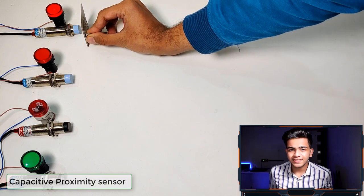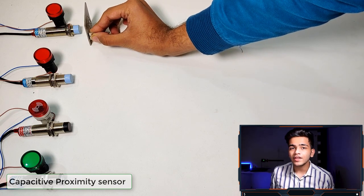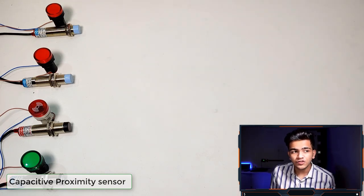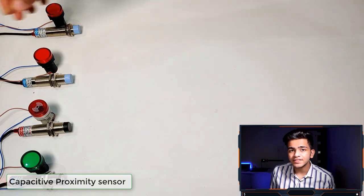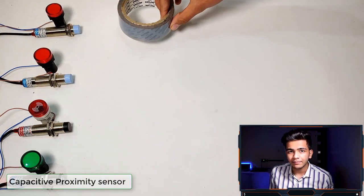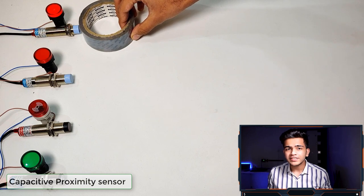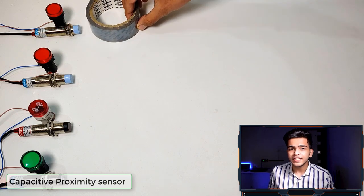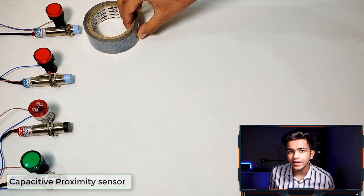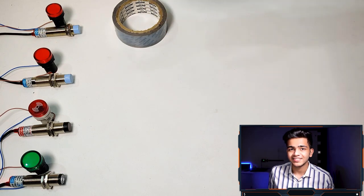As the diameter of the sensor increases, the sensing range also increases. Usually the range of a capacitive sensor is about 2 mm to 15 mm, but in automation you can also change the sensing range using a sensitivity adjustment at the back of the sensor.